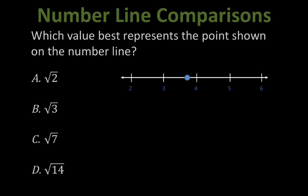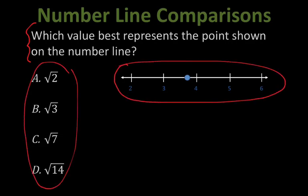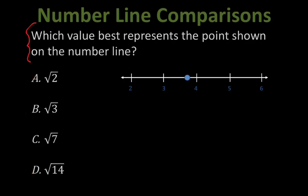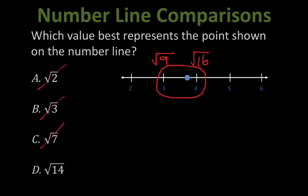Next up, you'll be given a number line with a point and asked which value best represents that point. One approach: I know my point is between 3 and 4. The square root of 9 is 3 and the square root of 16 is 4. So I need to find which of the answer choices falls between square root of 9 and square root of 16. That eliminates A, B, and C. D is the only number between square root of 9 and square root of 16.